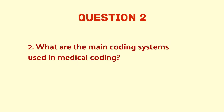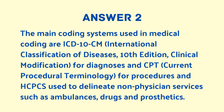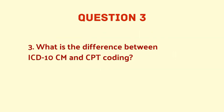What are the main coding systems used in medical coding? The main coding systems are: ICD-10-CM, that is International Classification of Diseases 10th Edition Clinical Modification, used for diagnoses; CPT, that is Current Procedural Terminology, used for procedures; and HCPCS, used to delineate non-physician services such as ambulances, drugs, and prosthetics.